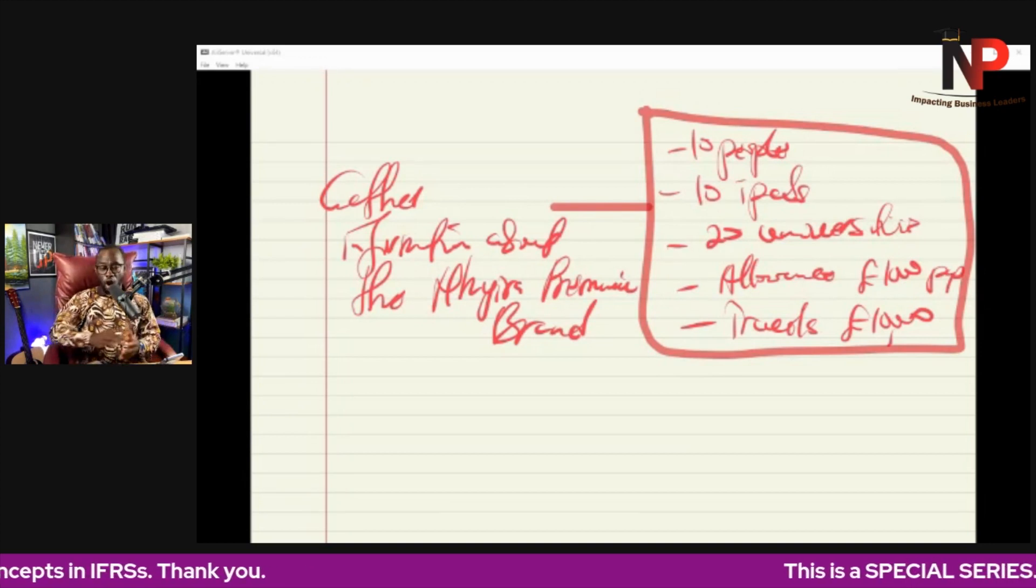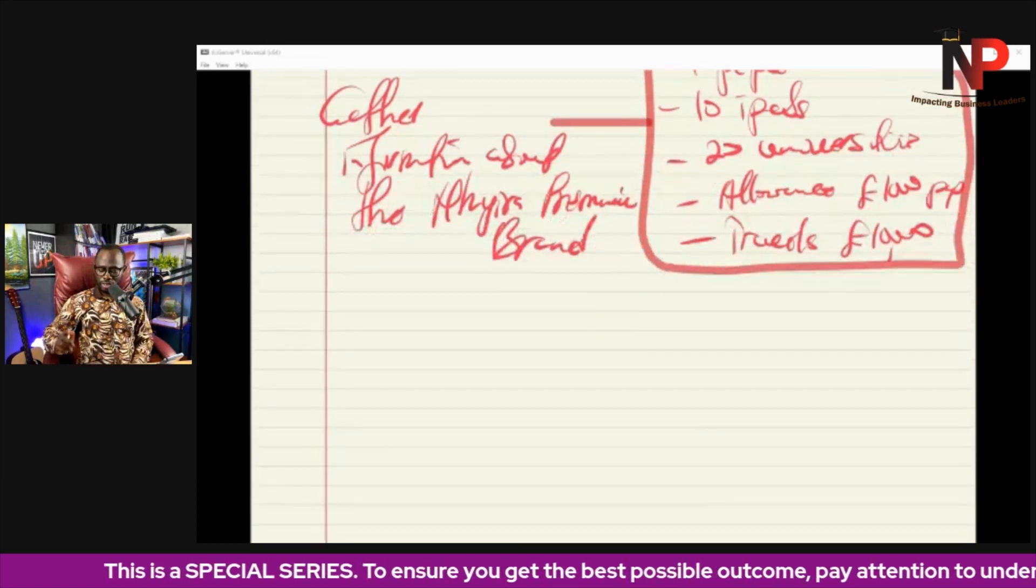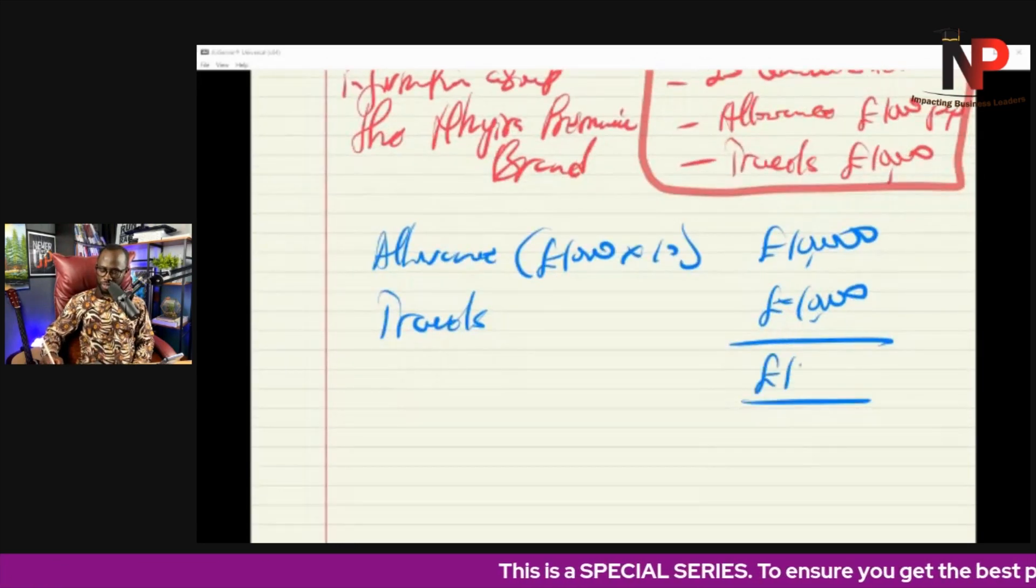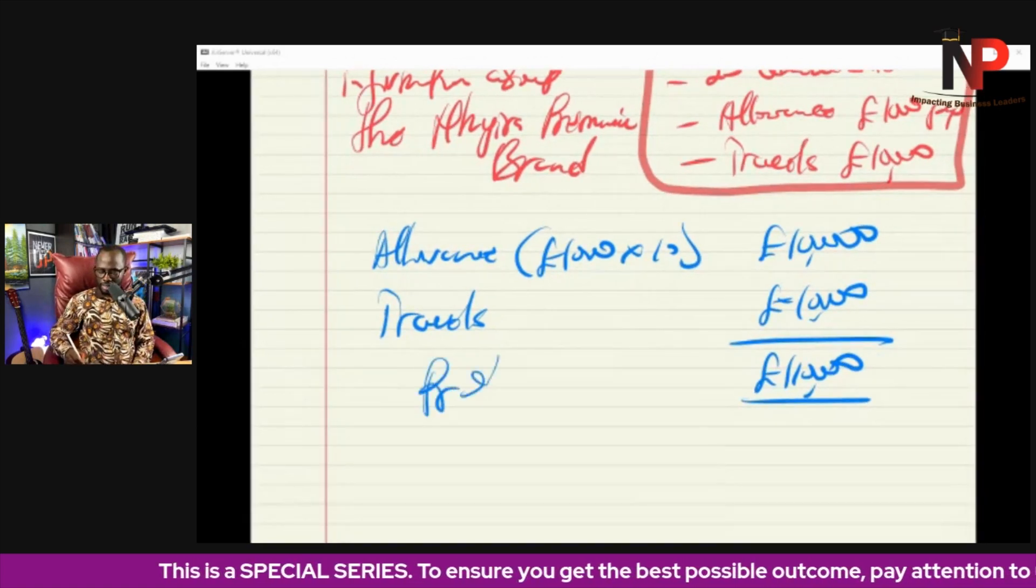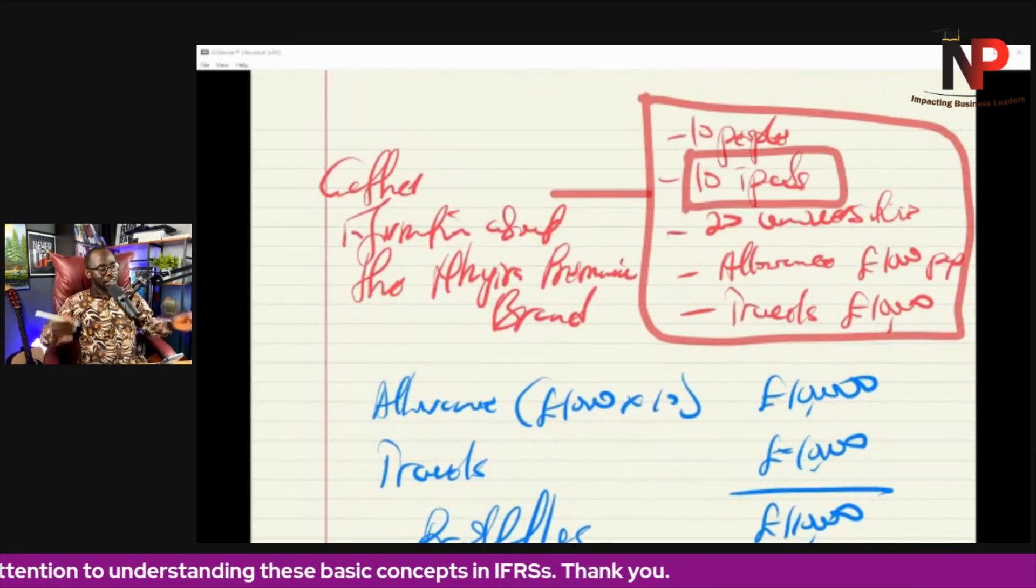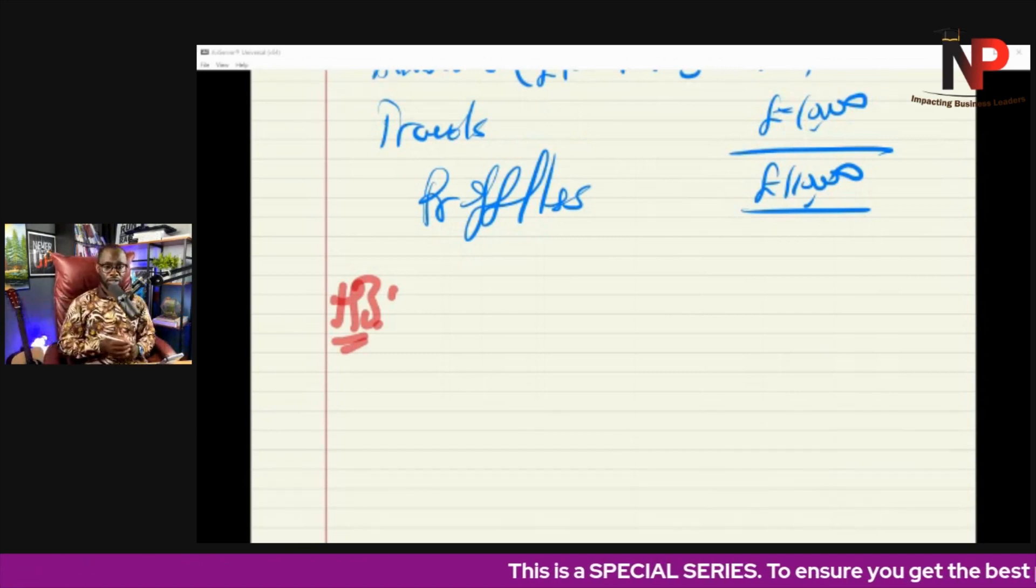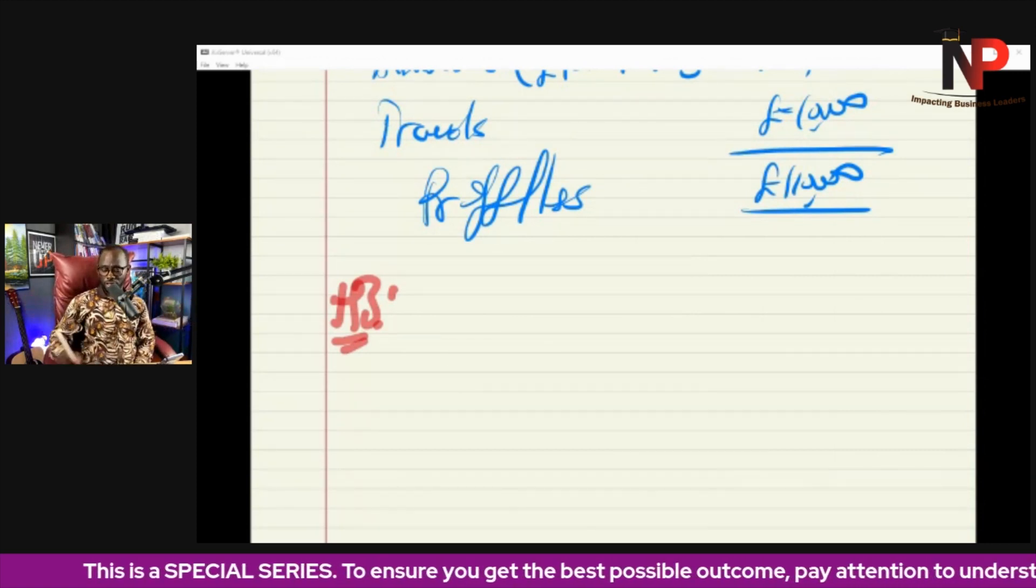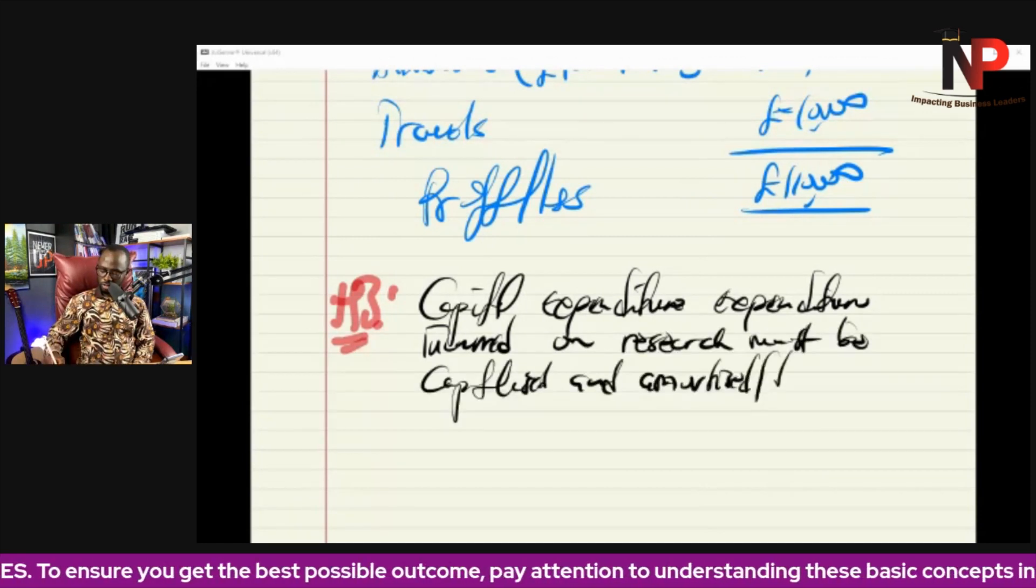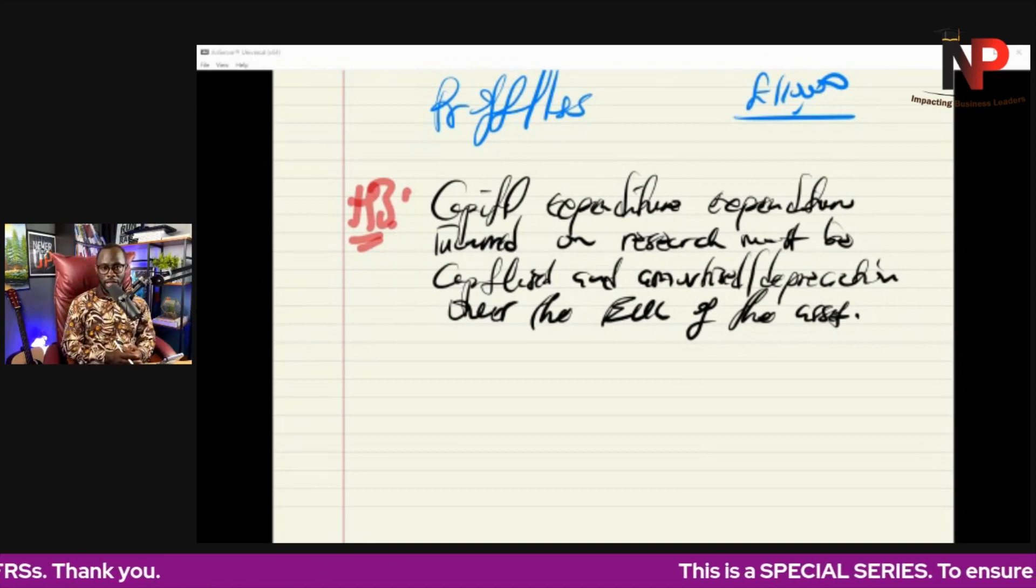Now, the standard states that all research expenses that we incurred should be written off in the P&L account. But there is a key thing that you must understand. It means that the allowances that we paid them, the travel expenses that we give them, these are research expenses, 110,000. They are recurrent expenditures. We recognize it as an expense in the profit or loss accounts. However, the cost of the iPad cannot be written off. So any capital expenditure incurred at the research phase must be capitalized and amortized over the economic useful life of the asset. So capital expenditure incurred on research must be capitalized and amortized or depreciated over the economic useful life of the iPad. And that could be three years, five years based on our own estimation.